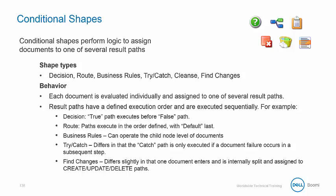With these shapes, each document is evaluated individually and assigned to one of several result paths. These result paths have a defined execution order and are executed sequentially. The decision will route documents on a true path or a false path. The route shape paths execute in the order defined, with the default path always running last.